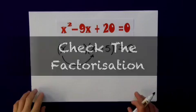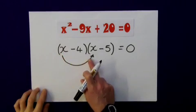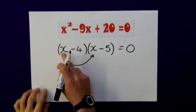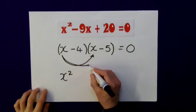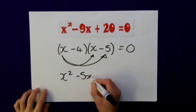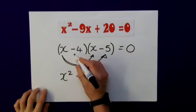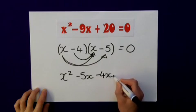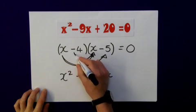Let's just see if this works by multiplying it back out. I've already determined that x times x does indeed give me x squared. I now multiply the x by the minus 5 to give me minus 5x. So I've done that bit.